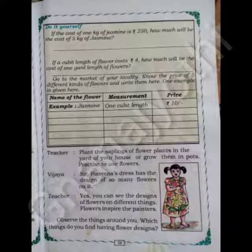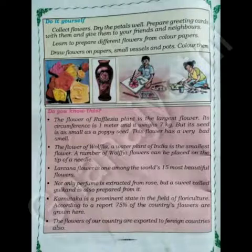Teacher says, 'Plant the saplings of flower plants in the yard of your house or grow them in pots. Practice using flowers.' Vijaya says, 'Sir, Shahina's dress has the design of so many flowers on it!' Teacher says, 'Yes, you can see the designs of flowers on different things. Flowers inspire painters. Observe the things around you — which things do you find having flower designs?'